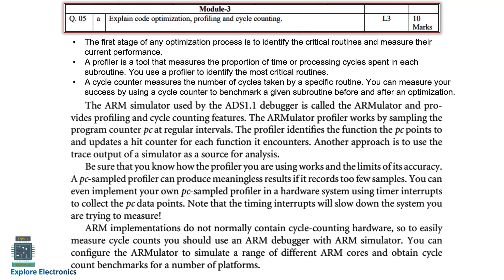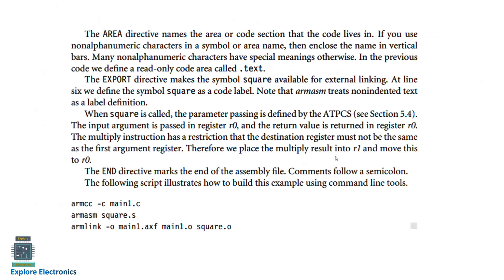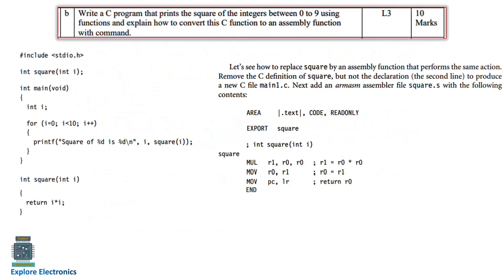The next question provides a C program to print the square of integers between 0 to 9 using functions, and asks how to convert this C function to an assembly function with a command. The C program is given along with an explanation of how to convert it to assembly, including the command used. Please go through this and understand how the conversion actually happens.